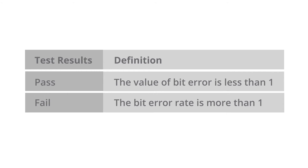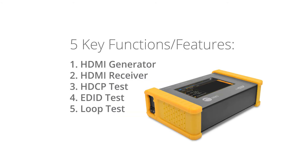To summarize, these are the five key features: HDMI generator, HDMI receiver, HDCP test, EDID test, and loop test. This is an essential tool for AV installers and system integrators because it generates multiple patterns for quality assurance, gives all information needed to verify your setup, helps pinpoint issues critical for customer satisfaction, improves troubleshooting and installation efficiency, and reduces costly site visits.